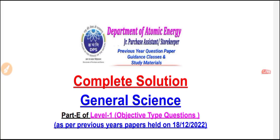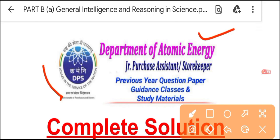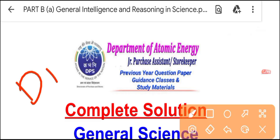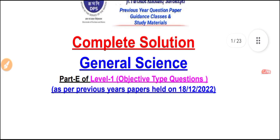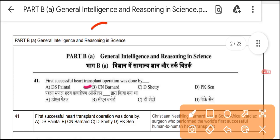Hello friends, welcome. Today I am going to discuss the previous exam paper solution for General Science. I hope my previous video was very useful. Now I am going to cover the next topic — General Science — which is asked in Part E of Level One in the examination of Junior Purchase Assistant, Department of Atomic Energy, commonly known as the DPS exam. Before starting, please take one minute to relax and have some water, then start this video, because attention is very important for learning.